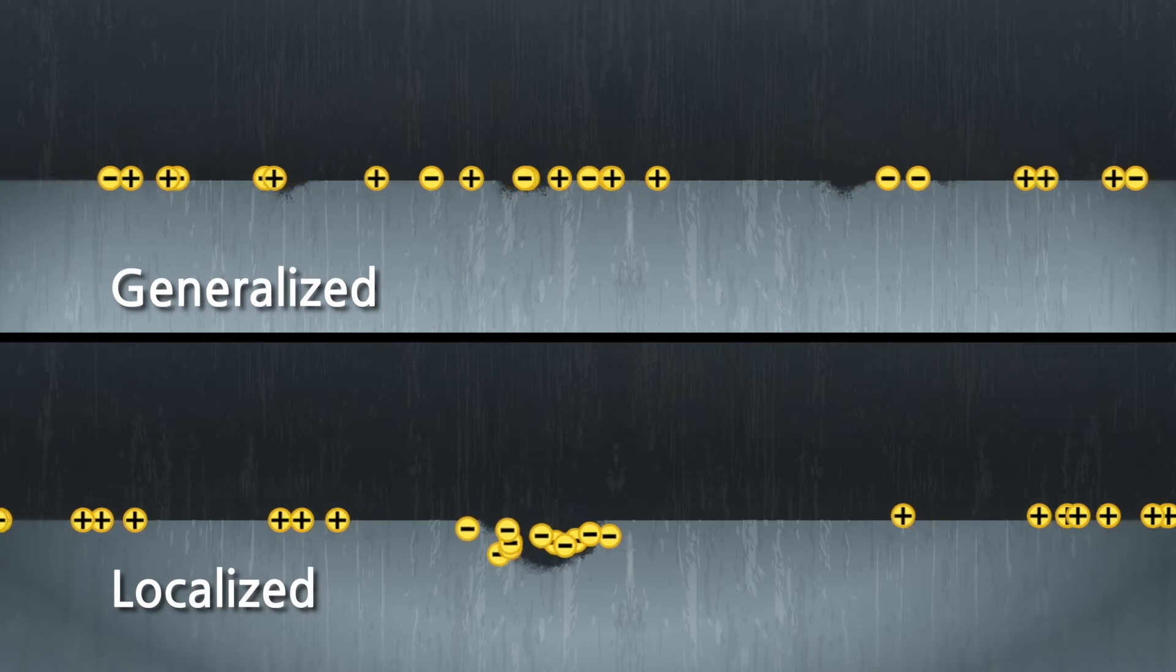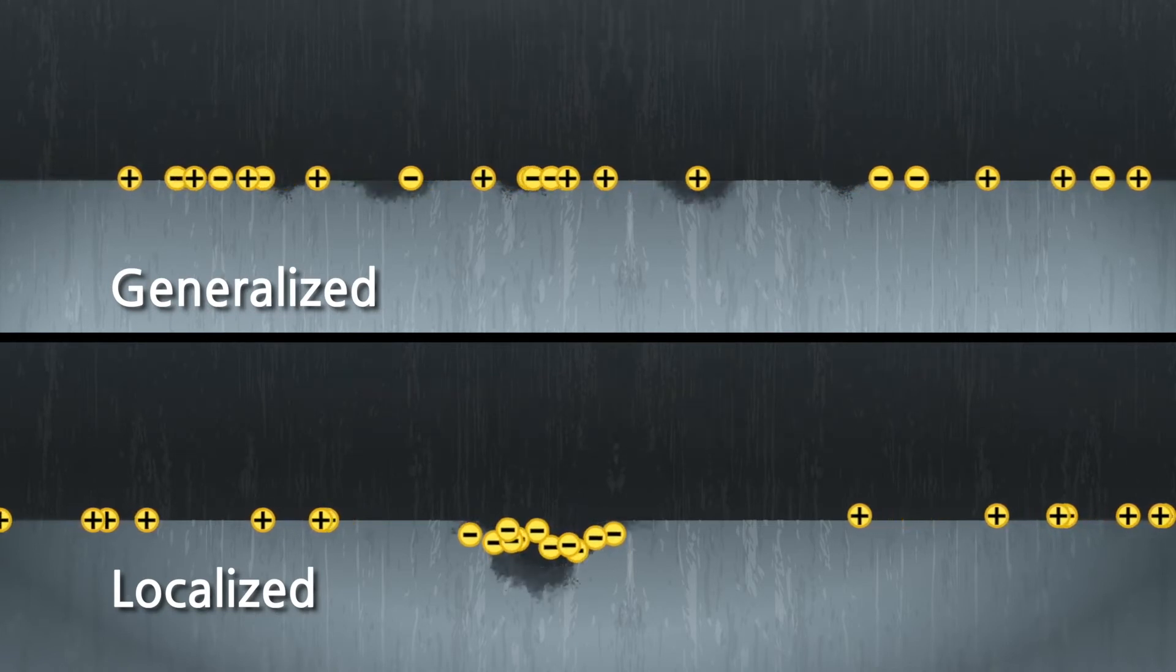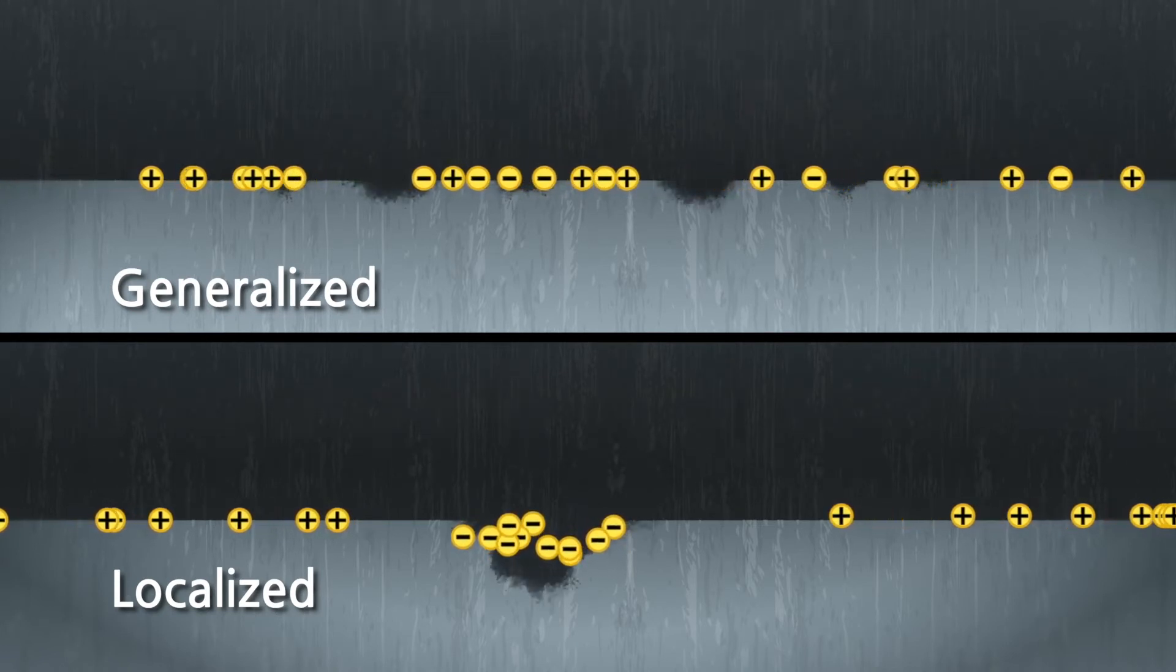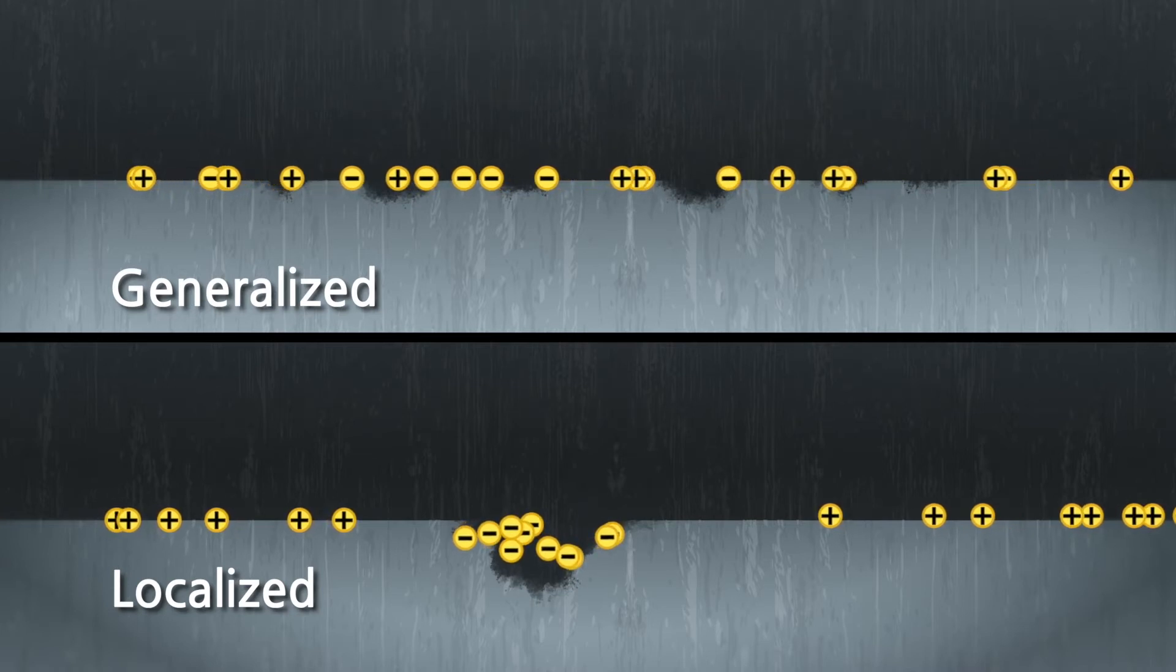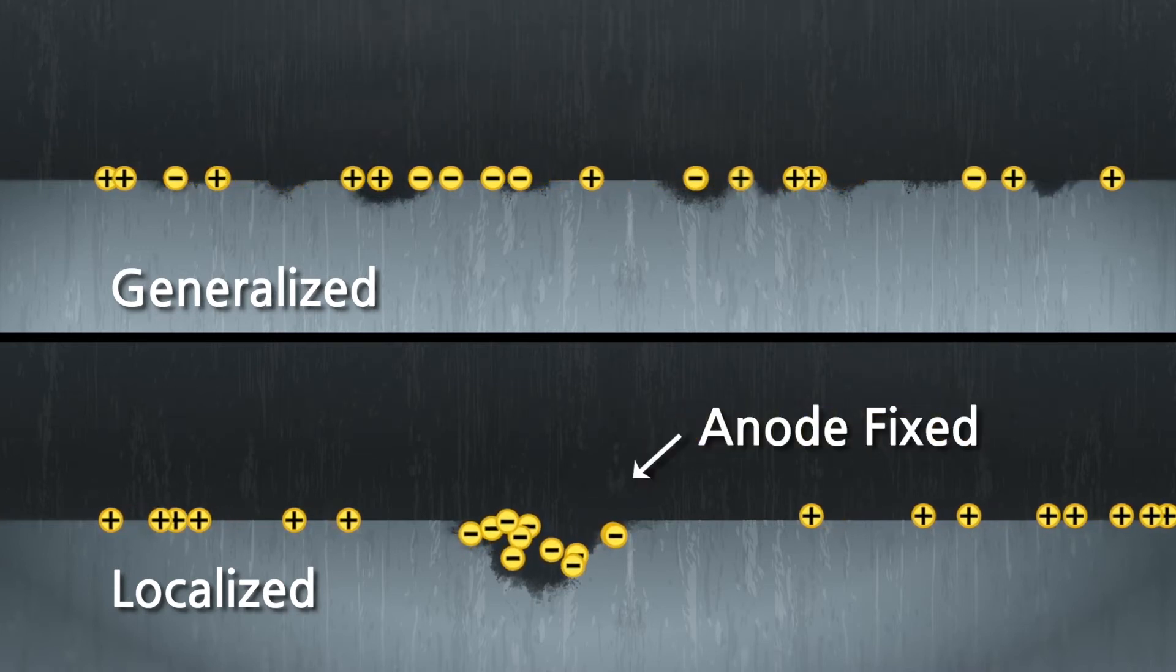Generalized corrosion occurs when tiny anodic and cathodic sites constantly move around the metal surface. A localized corrosion pit forms when an anodic site remains fixed in one spot.